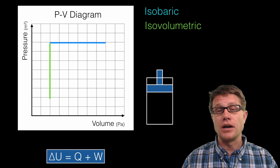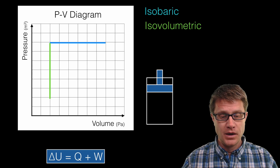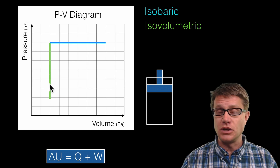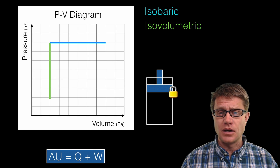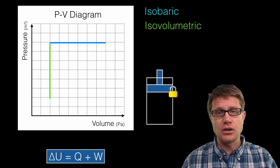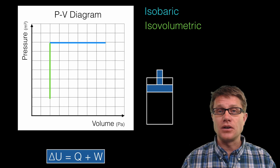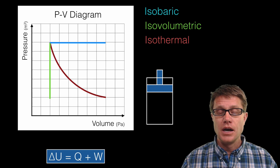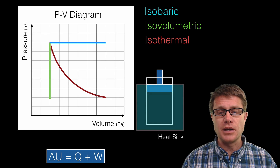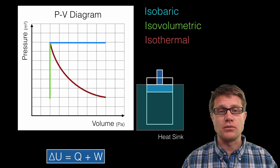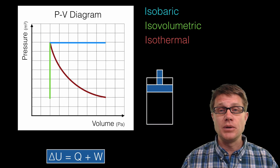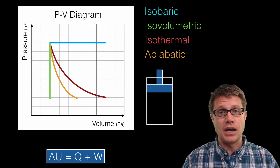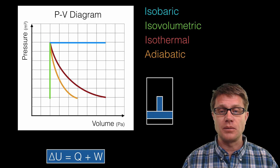We could also do isovolumetric, where we keep the volume the same — it just moves up and down on the diagram as we increase or decrease pressure. We lock the piston in place and add or remove temperature. We could also have isothermal, which always looks like a curve on the PV diagram. We use something like a heat sink to keep the same temperature throughout. Finally, adiabatic is where we pull out or push in very quickly so that no heat is exchanged with the surroundings, giving a curve that looks a bit different from isothermal.